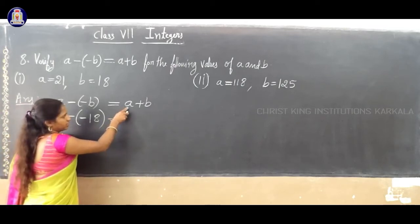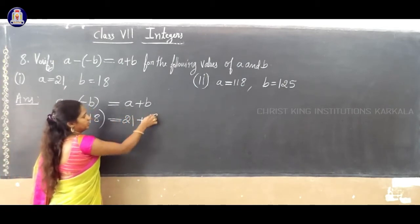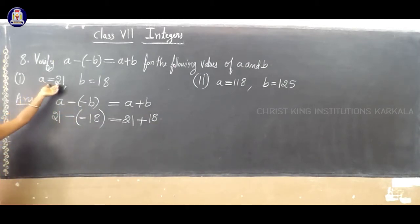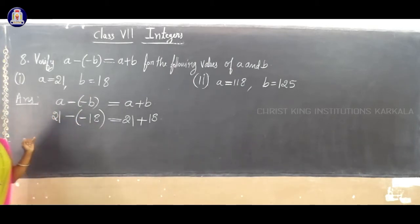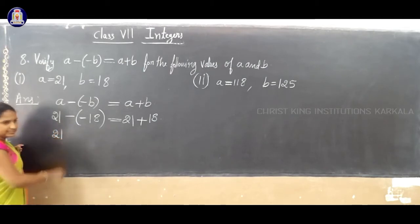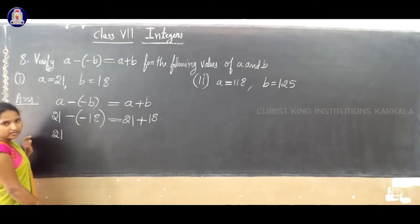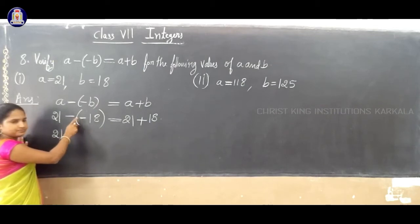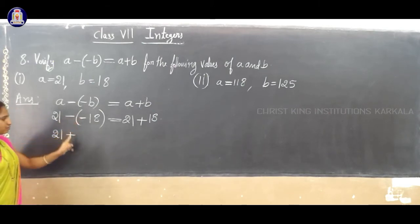First, substitute the values. In place of A we write 21, and in place of B we write 18. Now, to simplify the left-hand side: there is a bracket with minus of minus 18. You have to remove this bracket by multiplying the signs. Minus into minus gives plus, so we get plus 18.